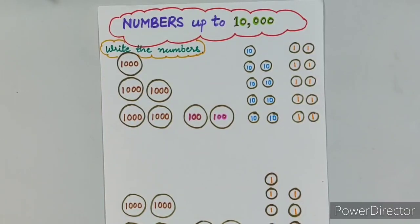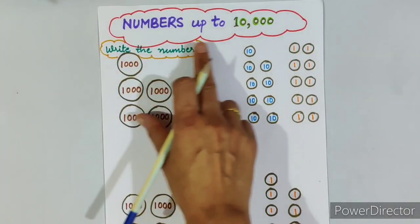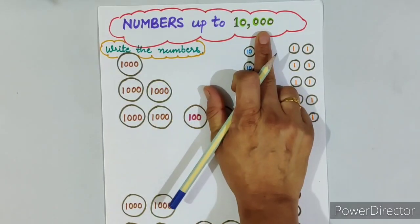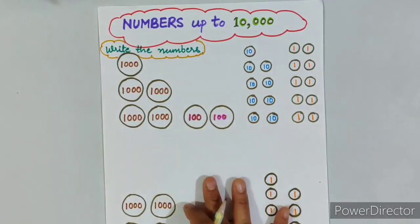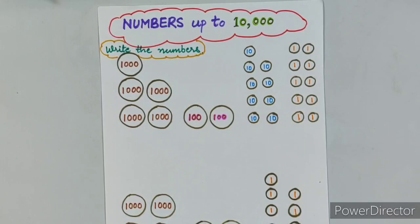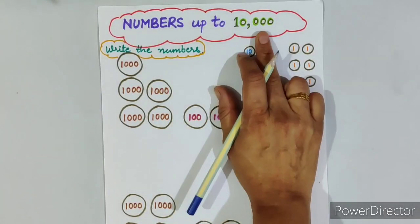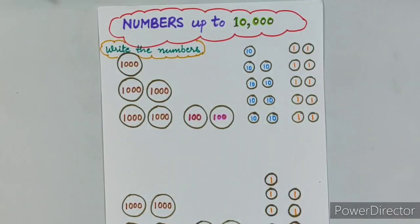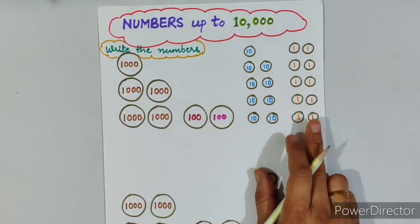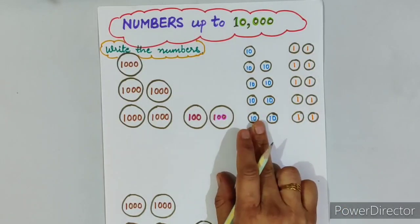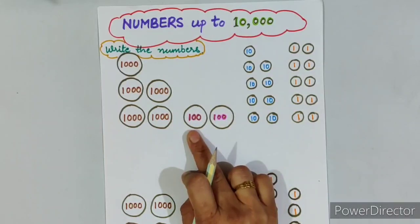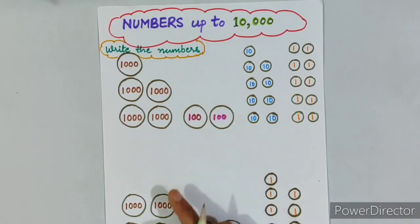Dear parents, today I am going to share a worksheet of numbers up to 10,000. This worksheet will help kids to understand how numbers of the 10,000 series are written after combination of lower series like 1s, 10s and 100s. So let's get on to our worksheet and understand the sequence.